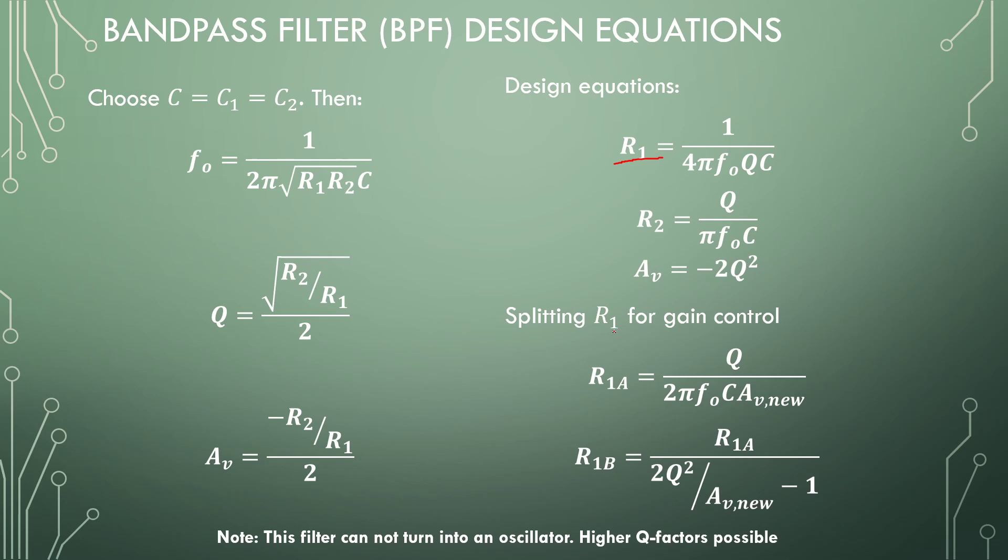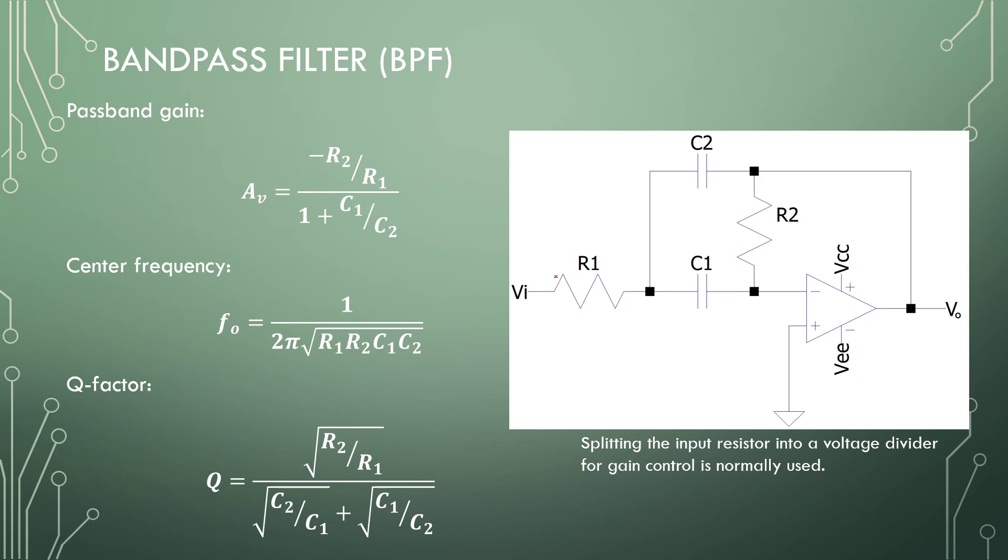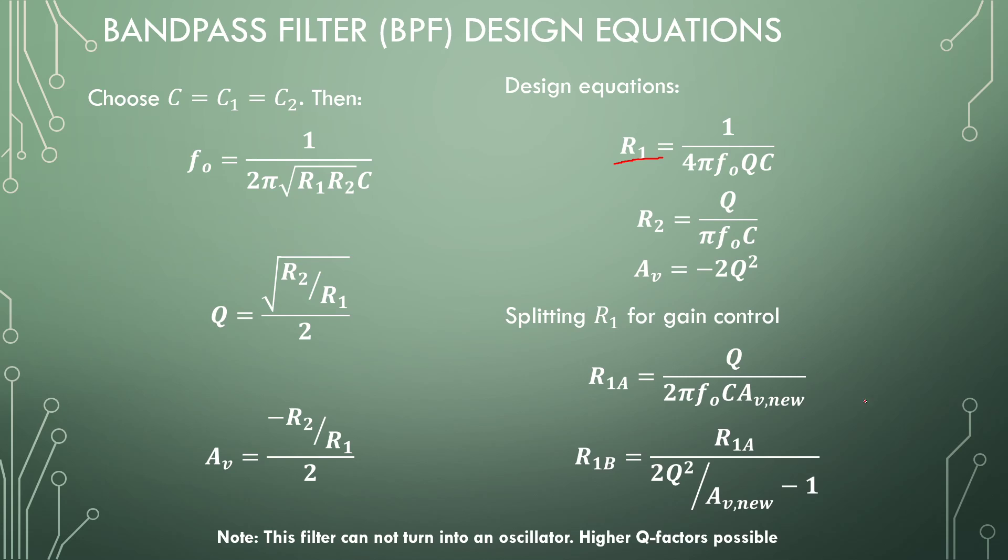Since we don't have control over the passband gain, we can split resistor 1 to become a voltage divider. The new equations that emerge are a function of only the new gain, where 2Q² is the old gain. If you watched the previous video on bandpass filters, this was old gain over new gain. Simple design equations—you only need four of these for a complete design for a specific center frequency, bandwidth or Q factor, and gain. Let's look at some problems.